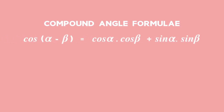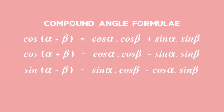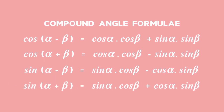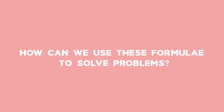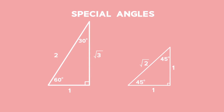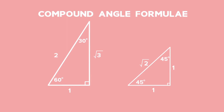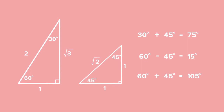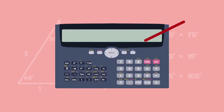Even though these formulae will be given to you on the matric formulae sheet, you should practice with them to know when to use them. We call these the compound angle formulae, since the angle in question is not a single angle but the combination of two or more angles. By using the compound angle formulae, any sum or difference of two special angles results in a new angle which we can evaluate without the use of a calculator.